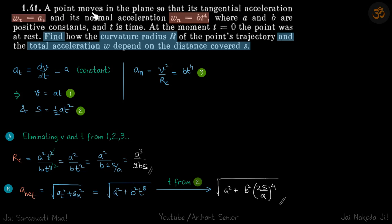A point is moving in a plane and its tangential acceleration is constant A, and its normal acceleration is a function of time bt⁴. We need to find the radius of curvature and the total acceleration as a function of s, the distance covered.